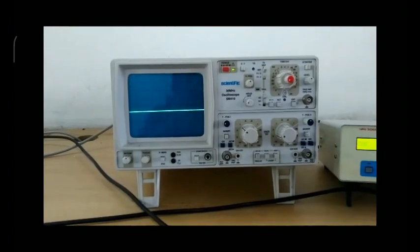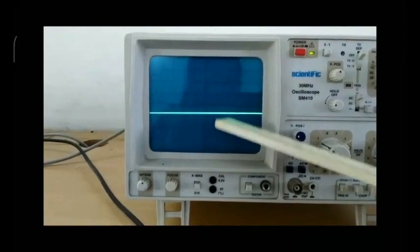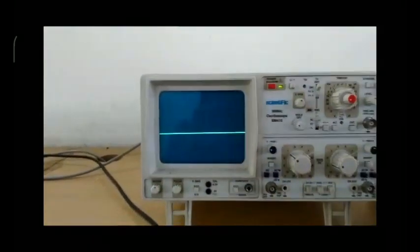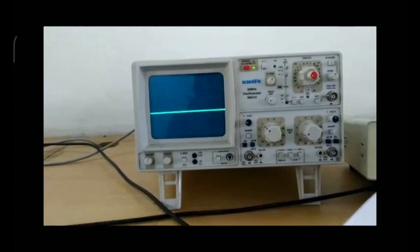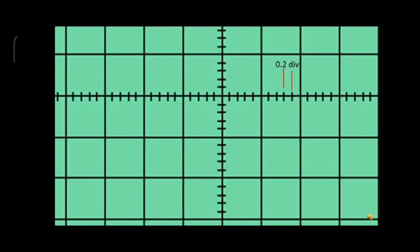Without any input signal, one will get a straight line on the CRO screen. The y-axis of the screen gives the voltage of the signal and the x-axis represents the time component. The center horizontal and vertical lines are subdivided with small lines — the separation between two small lines is 0.2 division and the side length of each small square is one division.